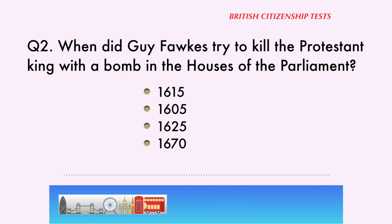Question 2. When did Guy Fawkes try to kill the Protestant king with a bomb at the Houses of Parliament? In 1615, in 1605, in 1625, in 1670. The correct answer is: in 1605.